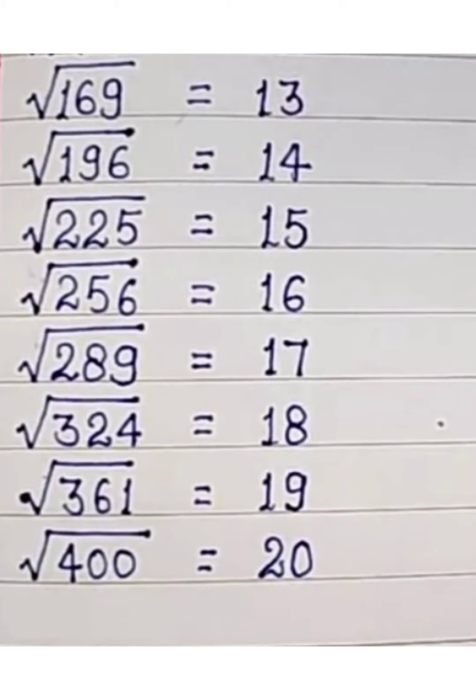Next, 13 square root is 169, 14 square root is 196, 15 square root is 225, 16 square root is 256, 17 square root is 289, 18 square root is 324, 19 square root is 361, and last 20 square root is 400.